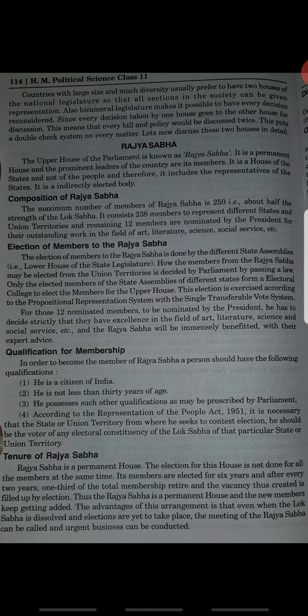Rajya Sabha is a house of the states and not of the people. The voting is conducted within the members of the Rajya Sabha itself and includes representation of the states. It is an indirectly elected body.